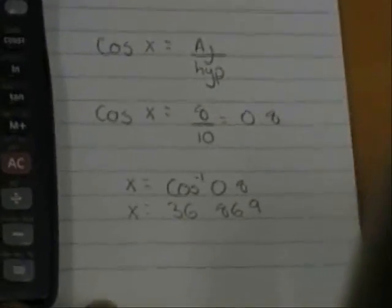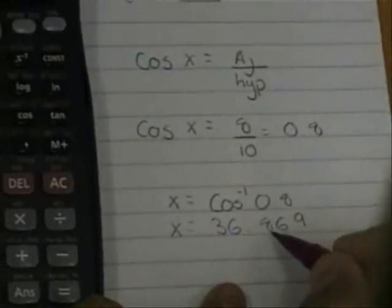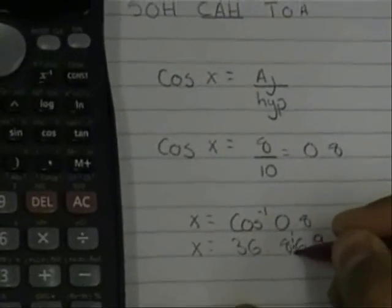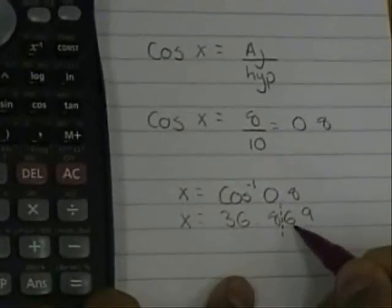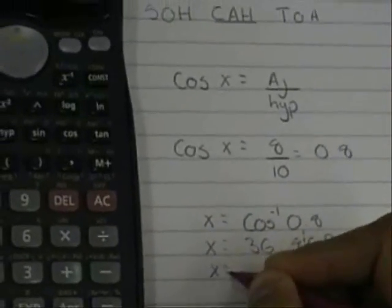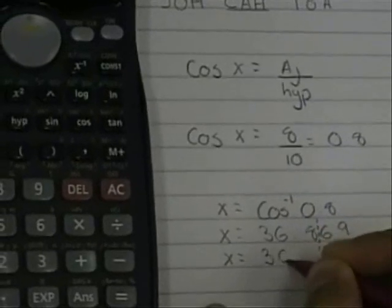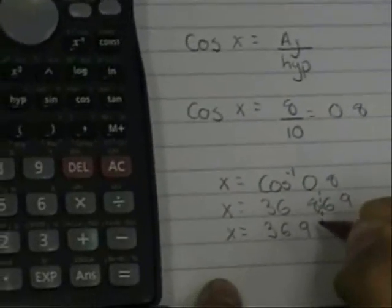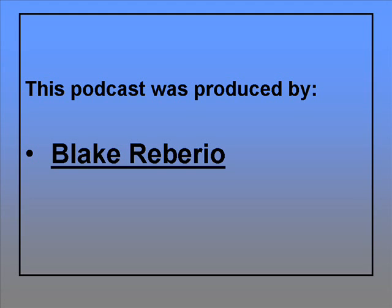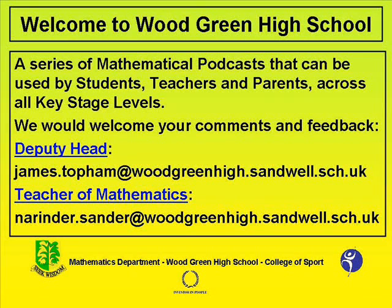We are asked to find this in one decimal place. Here is the first decimal place. As this is higher than 5 we shall round it up. Remember your degree symbol.